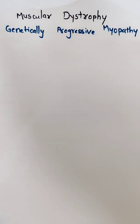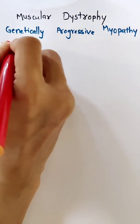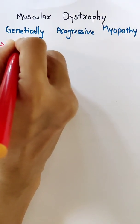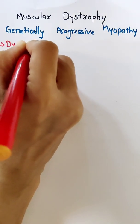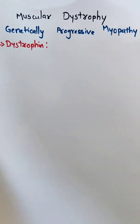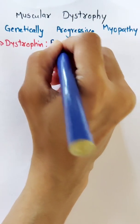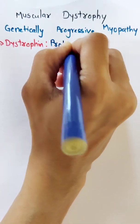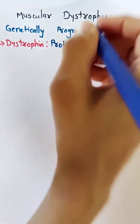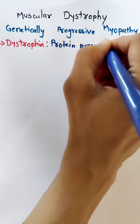First we need to know what is dystrophin. Dystrophin is a protein that is present in the muscle fiber.